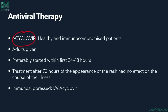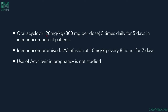Antivirals: Acyclovir is given in healthy and immunocompromised patients and adults to prevent complications, preferably started within 1–3 days of onset. Oral dose is 20 mg/kg (800 mg), given 5 times a day for 5–7 days. Immunocompromised patients receive IV acyclovir 10 mg/kg every 8 hours for 7 days. Acyclovir can be given in pregnancy but has not been fully studied.